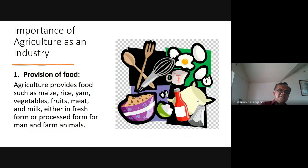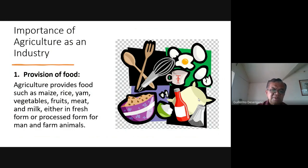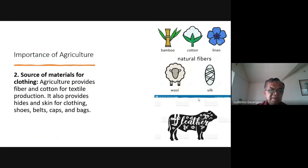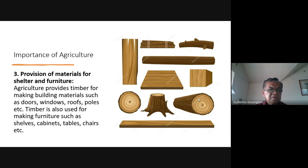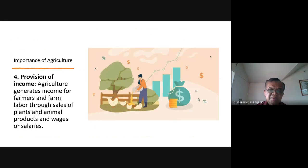Now let's look at agriculture as an industry. We have previously discussed agricultural science; now let's see what agriculture as an industry provides. Basically: provision of food — corn, rice, root crops, milk, meat, etc. Clothing — wool, silk, leather, cotton, linen, bamboo. Also provision of materials for shelter and furniture, such as wood for tables, chairs, and cabinets. And provision of income — livelihood for many people.